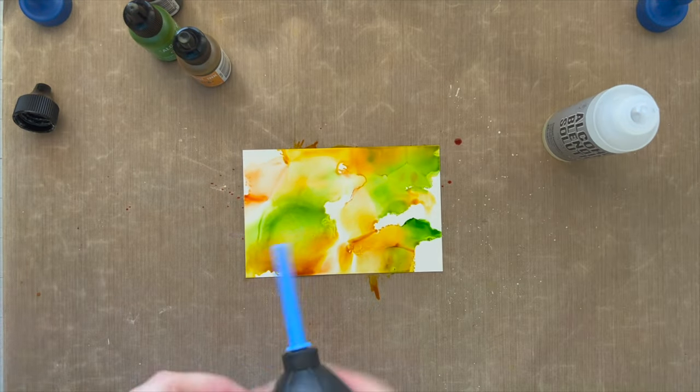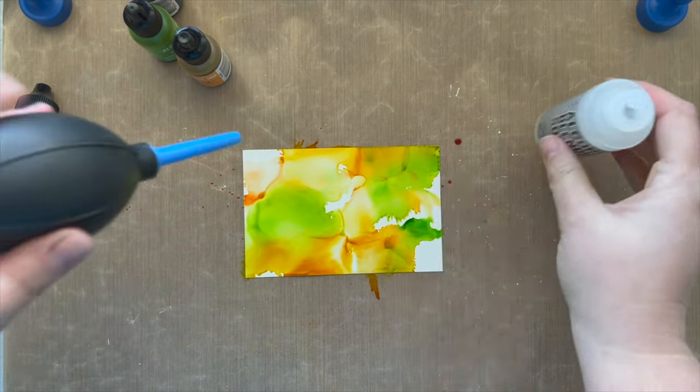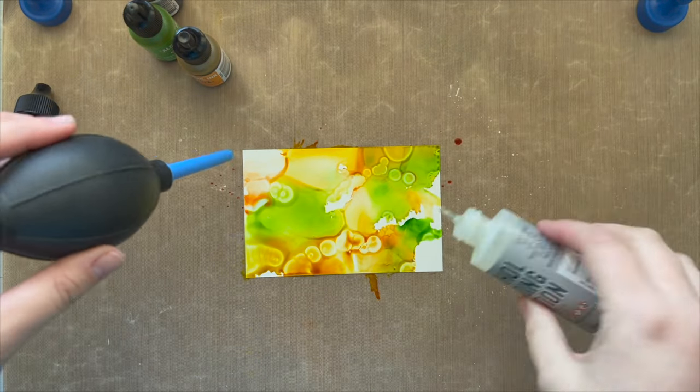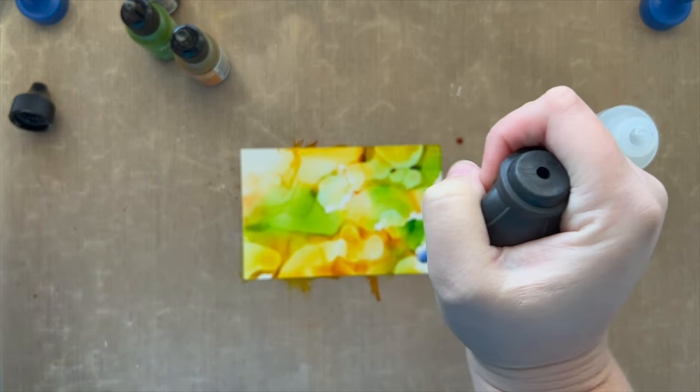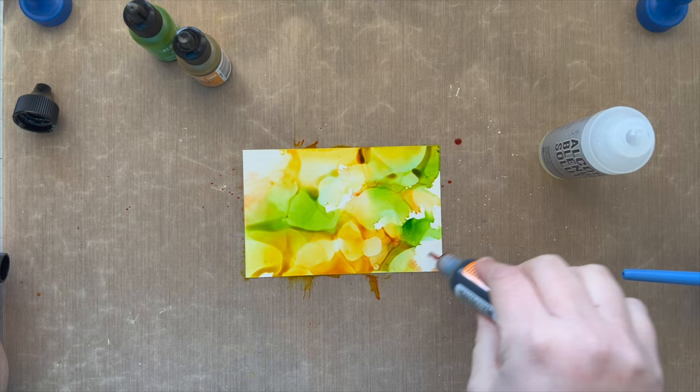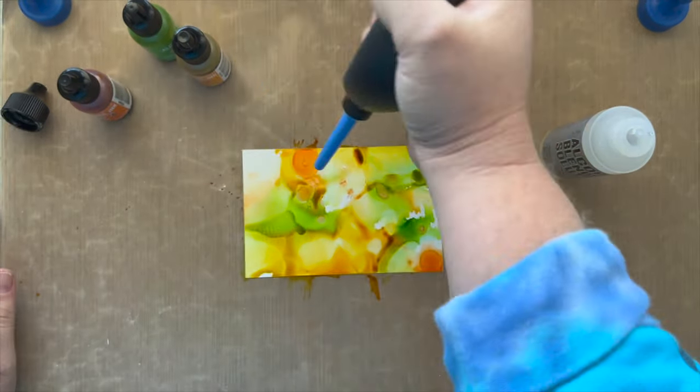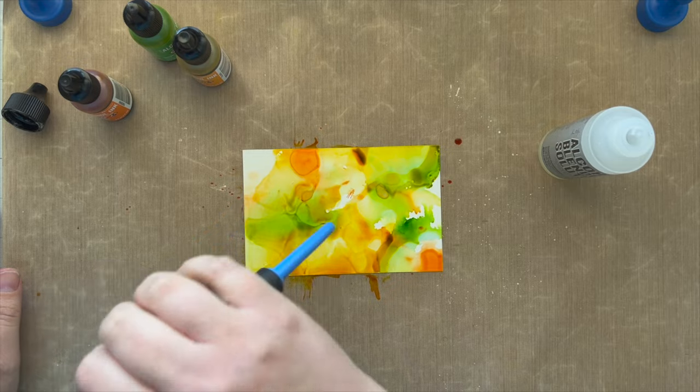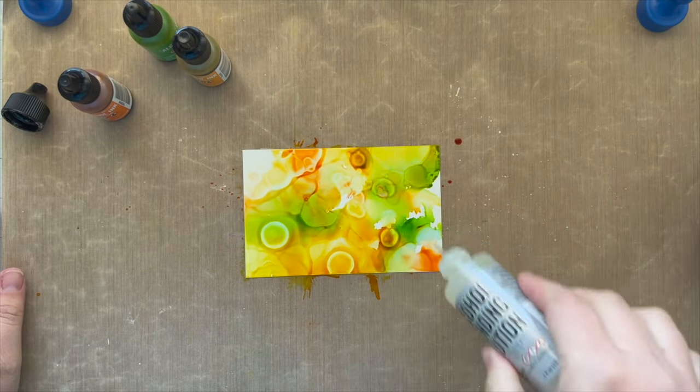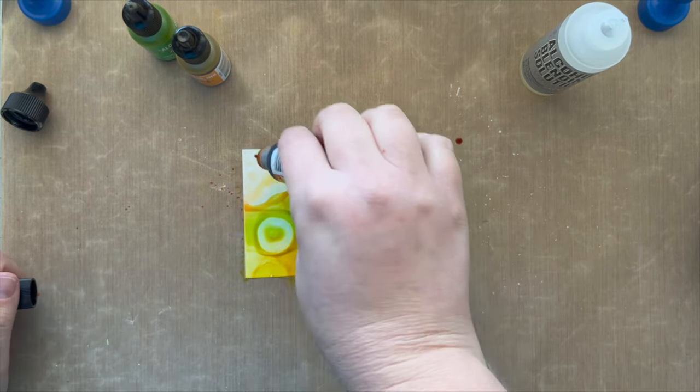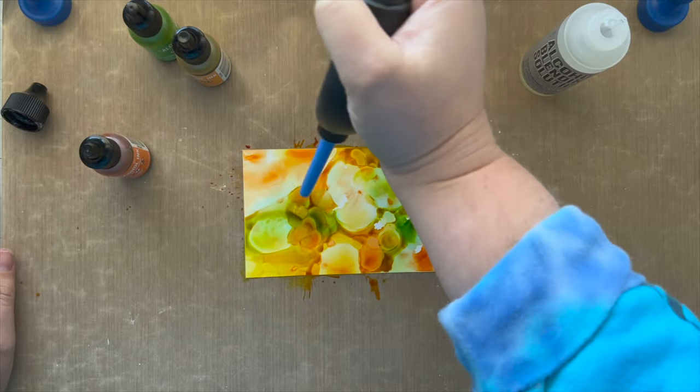I will have the names of the alcohol inks listed down below so you could have that as a reference if you'd like to recreate or see if you have these colors in your stash. I am using a little squeeze tool just to put on some air onto my Yupo paper here and then adding more blending solution and more alcohol ink.